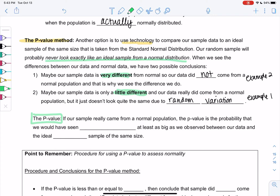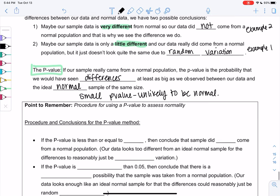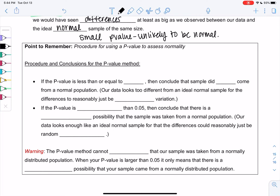So the p-value is going to measure if our sample really came from a normal population. The p-value is the probability that we would have seen differences at least this big as we observed in our data compared to the ideal normal. So what's the probability would be this different? Small p-values means it's probably not normal because it's very unlikely to see these differences. So that's the big takeaway here: unlikely to be normal. That's because it would be unlikely to just randomly have these differences.